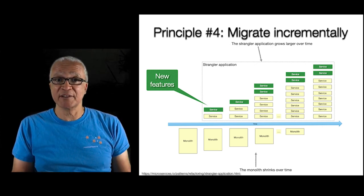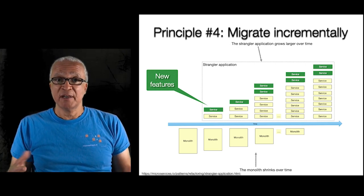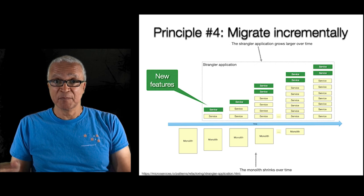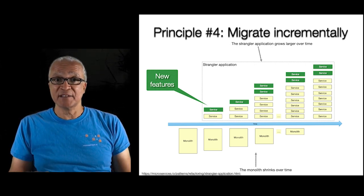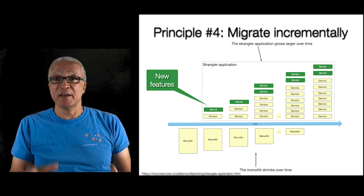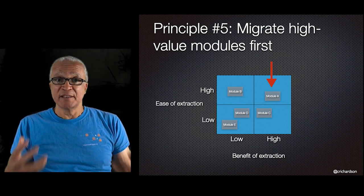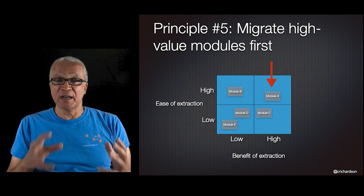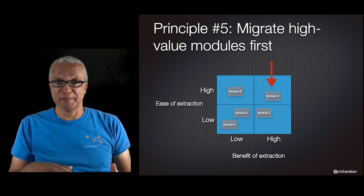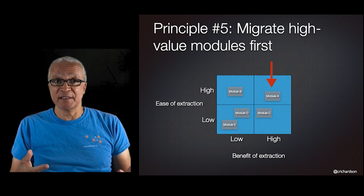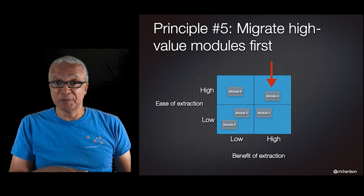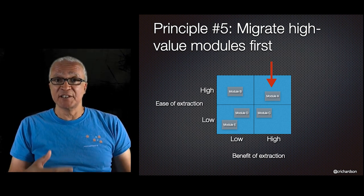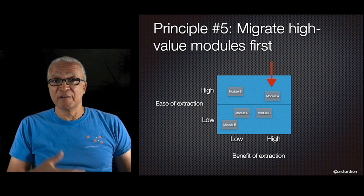The fourth principle: migrate incrementally using the Strangler application pattern. At the beginning you just have the monolith. Over time, more functionality is migrated out into services; you can also implement new features directly as services. The monolith gradually shrinks and might ultimately disappear. The fifth principle: focus on migrating functionality that gives the highest return on investment. Migrating a module is time consuming — only do it if it resolves dark energy forces like improved team autonomy or a faster deployment pipeline.